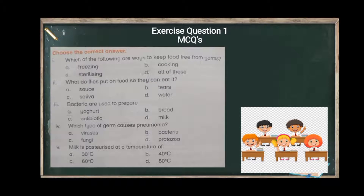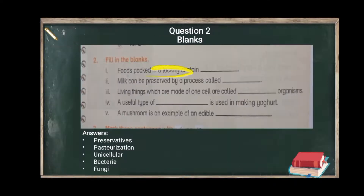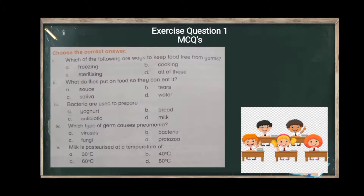Now moving to the exercise questions. Question number 1 on page number 18 is choose the correct answer. Which of the following are ways to keep food free from germs? The options include freezing, sterilizing, and cooking. The answer is option D — all of the above.